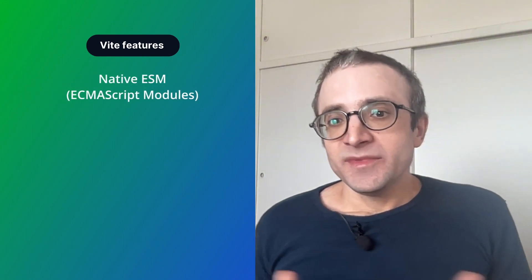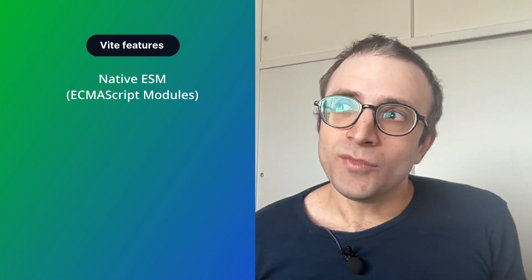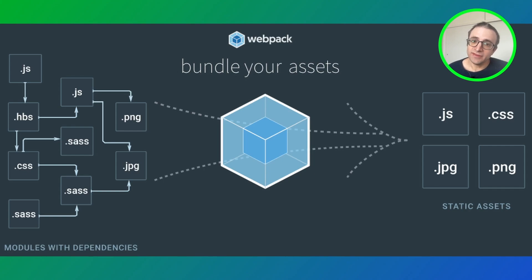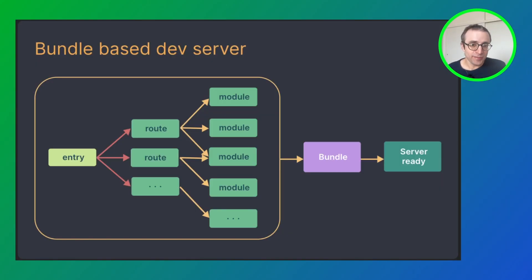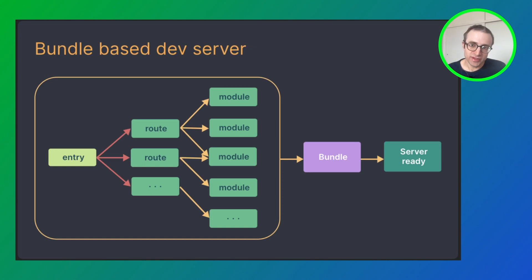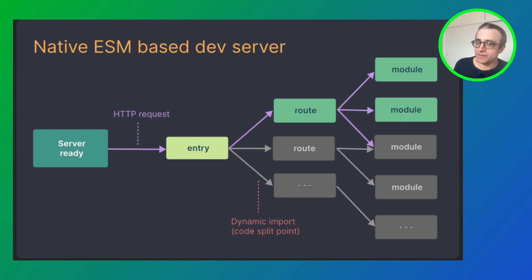Let's talk about the benefits and features. First, we have native ESM. ESM is a standard for loading JavaScript as modules in browsers. Before this standard, developers had to bundle all their JavaScript into one file and send it to the server — this is how Create React App worked, leading to a slow development experience where every change required a full bundling step. Vite uses ESM to eliminate the need for bundling during development.